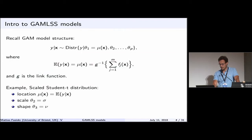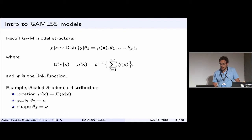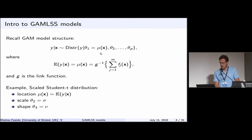Recall the GAM model structure we have seen before: we are modeling the conditional distribution of Y given some covariates X, and our conditional distribution is parametrized by some parameters theta_1 to theta_p. So far we have only modeled one of those, which generally corresponds to the expected value of Y given X, using fairly general effects with an additive structure and a link function.